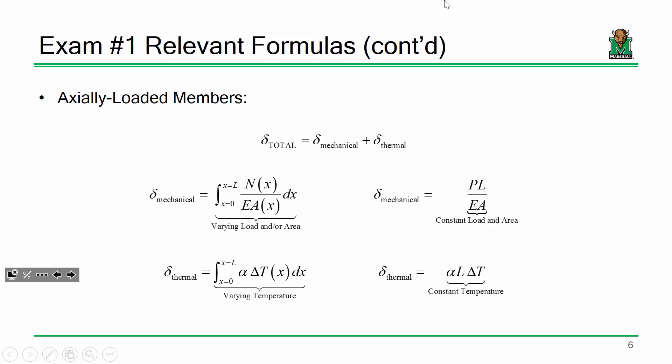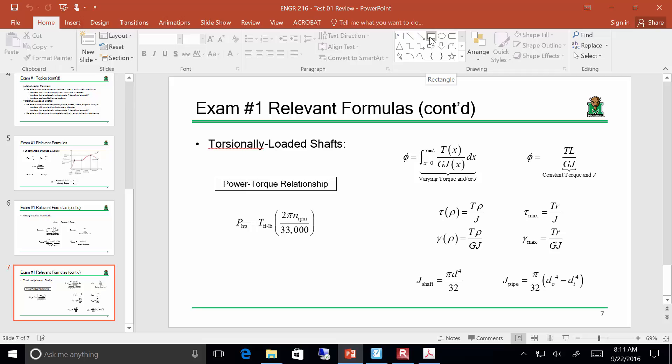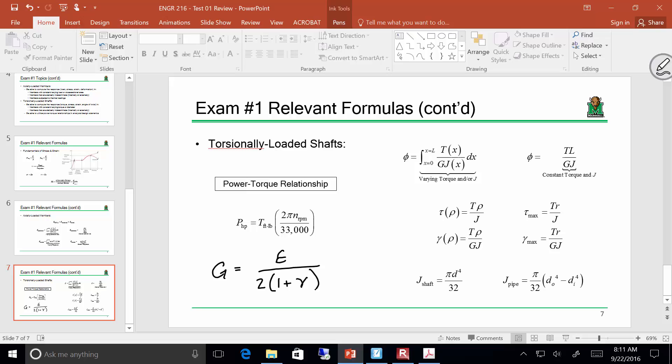For torsionally loaded shafts, varying torque and/or J means you have to integrate; constant torque and J is just TL over GJ. One formula I should add: G equals E divided by 2 times the quantity involving Poisson's ratio — that's a good one to write in. The angle of twist follows the same pattern. We also have the formulas for maximum shear stress, shear strain, J for a shaft or pipe, and the power-torque relationship in US units — don't worry about SI.